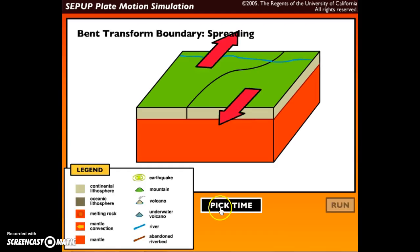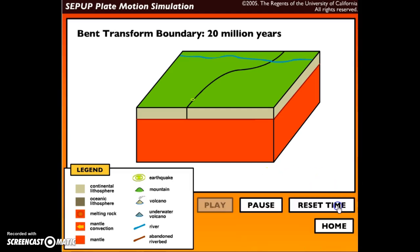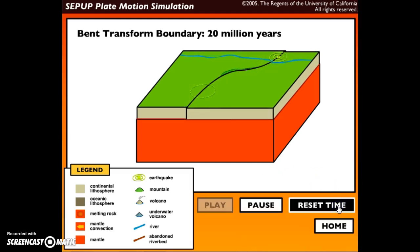We're going to see the plates over time yet again. We're going to look at 20 million years. I've got to make sure I'm paying attention to this legend or key to help me identify those geologic features and events that are formed as the spreading bent transform boundary is occurring. So let's watch.